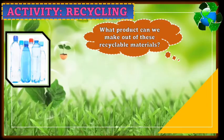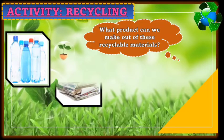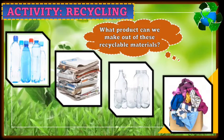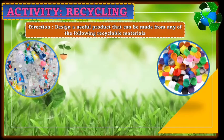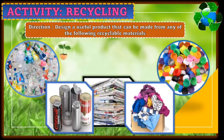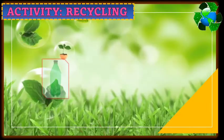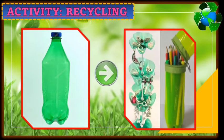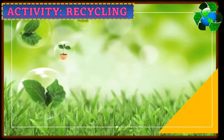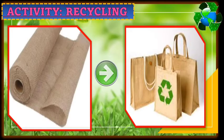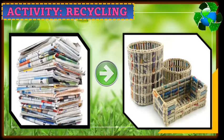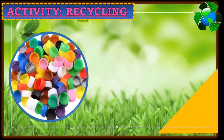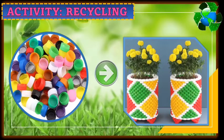What product can we make out of these recyclable materials — plastic bottles, newspapers, bottle containers, and clothes? Design a useful product that can be made from any of the following recyclable materials: plastic, cups, plastic bottles, tin cans, clothes, and newspapers or magazines. Out of a plastic bottle, you can make this product. Out of cloth, you can make eco bottles. Out of newspaper, you can make a pen holder. When you have plastic cups, you can make a vase for plants.